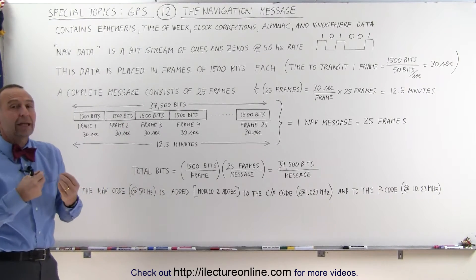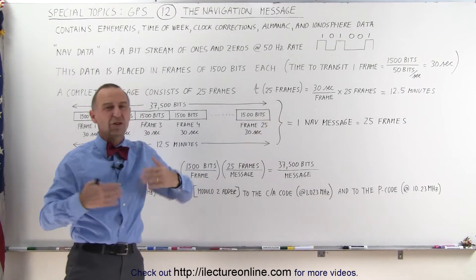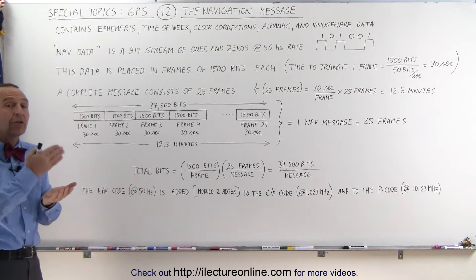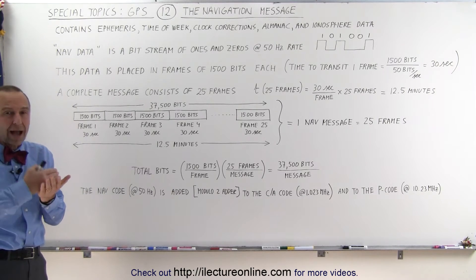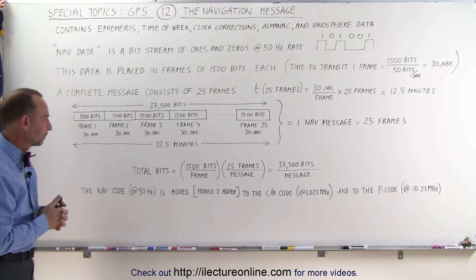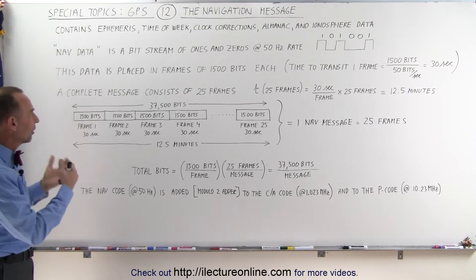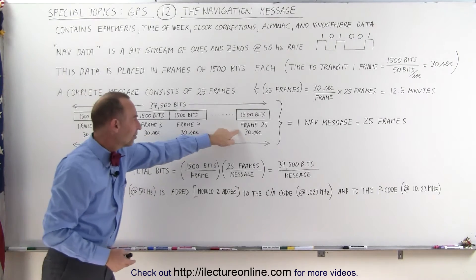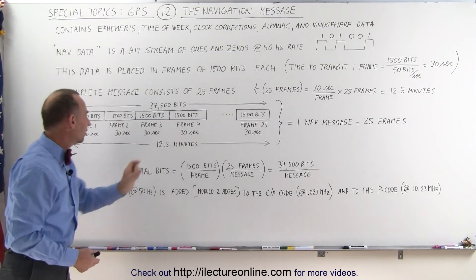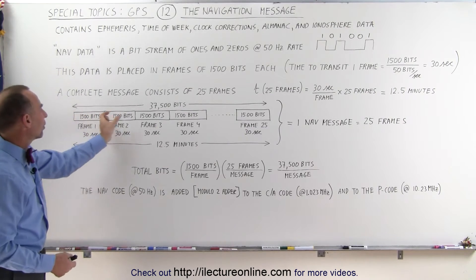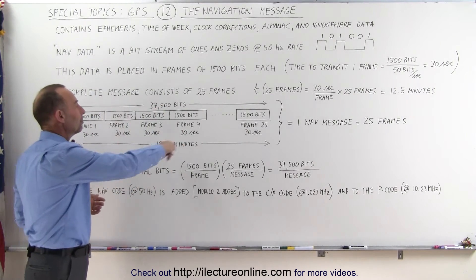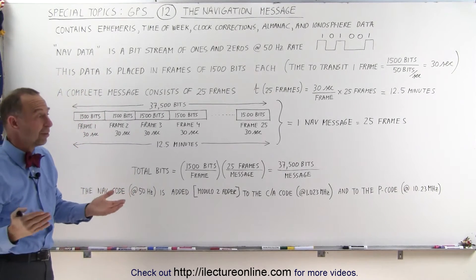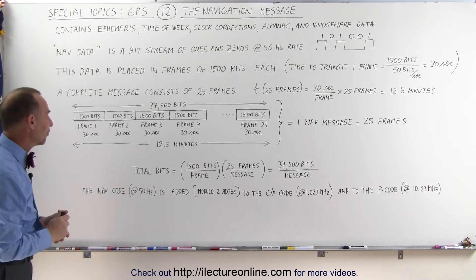That data is only updated once every 12 and a half minutes, which is just fine because that data is not as critical to be updated as some of the other data, like the time and clock corrections. Notice here the structure: there are 25 frames, each frame takes 30 seconds to transmit, each frame contains 1500 bits. So when you add them all together, the entire navigation message contains 37,500 bits. One navigation message is indeed the totality of 25 frames.